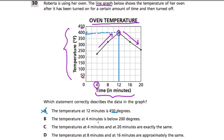B says the temperature at 4 minutes is below 200 degrees. Well, if I go up on 4 minutes and I follow it over, I see that it's actually above 200. It's between 200 and 250, maybe at about 225. So B is false.